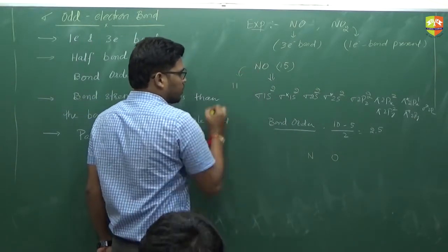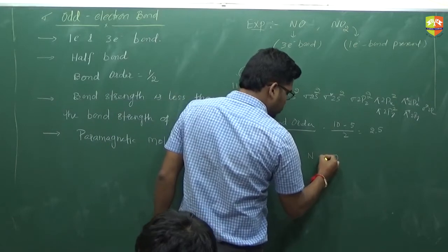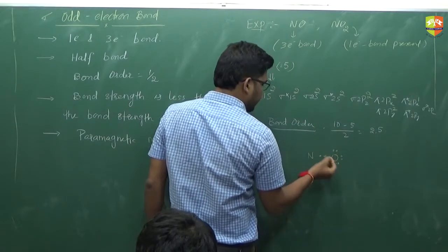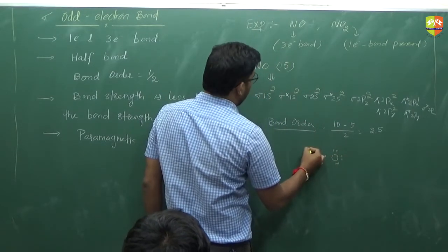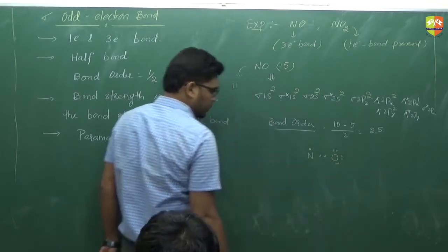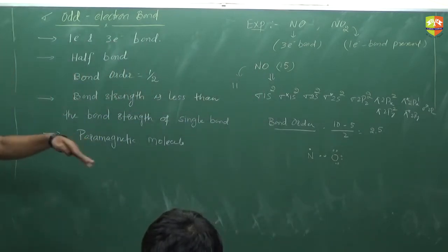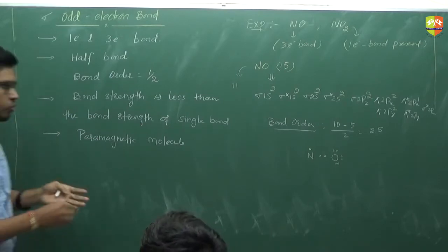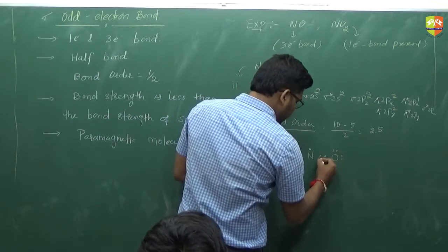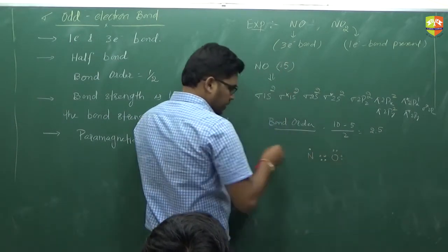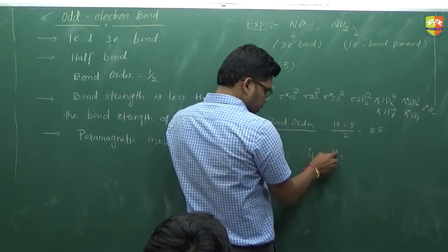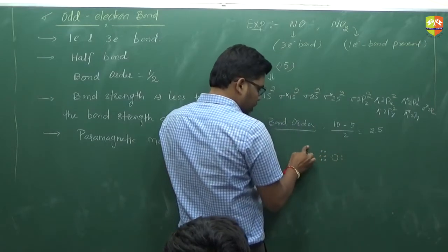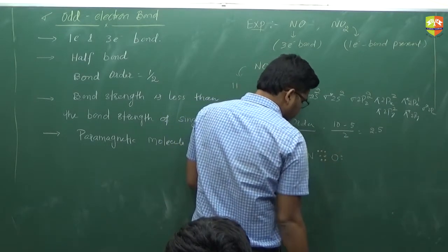NO has 11 valence electrons. When you place electrons: 1, 2, then 3, 4, 5, 6, 7, 8 — that's 8 plus 2 equals 10, and 1 electron remaining. This lone pair converts into a bond pair, together with one electron of nitrogen, making a 3-bond pair. So it is not a normal Lewis structure as in other molecules.